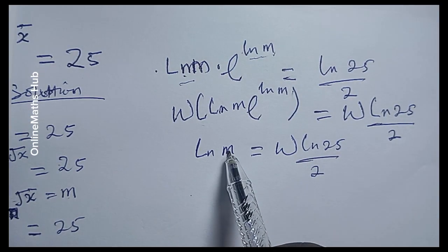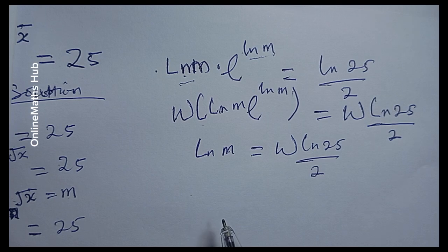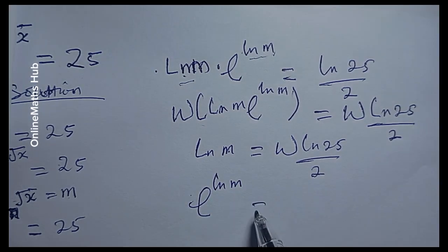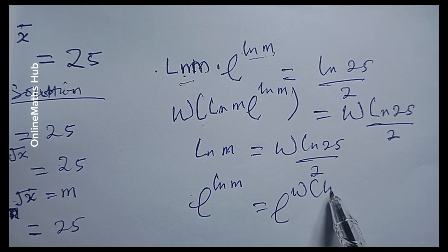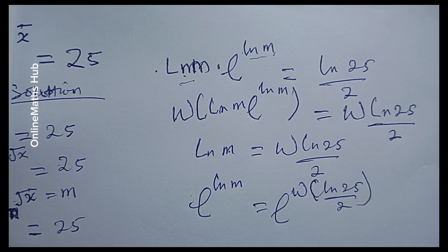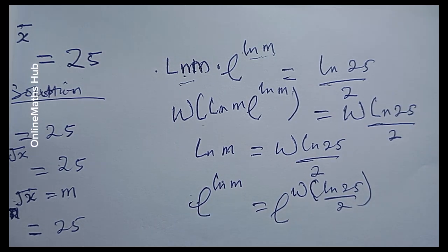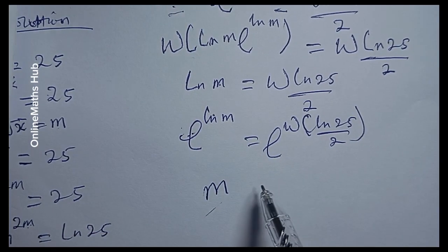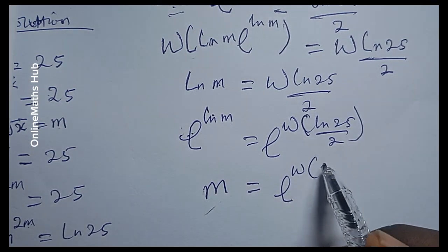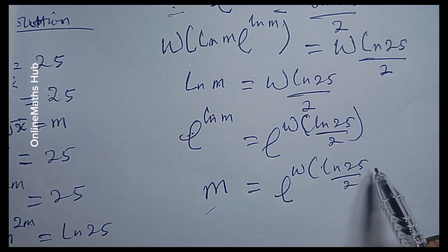To get m, I'm going to take the exponential of both sides, giving e to the natural log of m, equal to e to the Lambert W of the natural log of 25 divided by 2. Since e to the natural log of m equals m, we have m equal to e to the Lambert W of the natural log of 25 divided by 2.